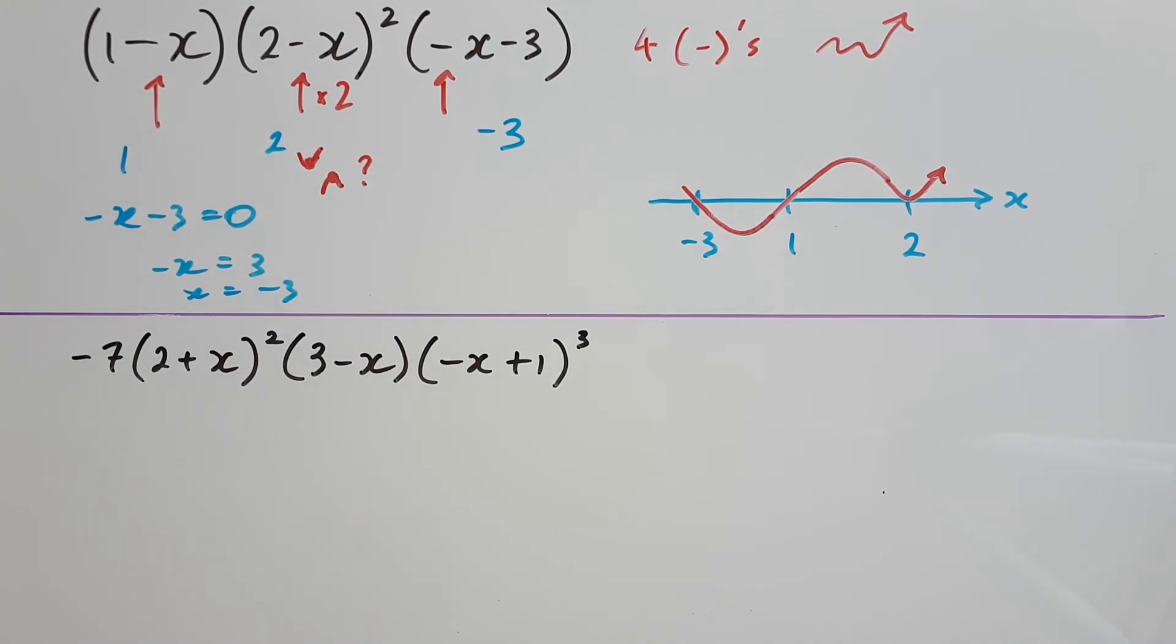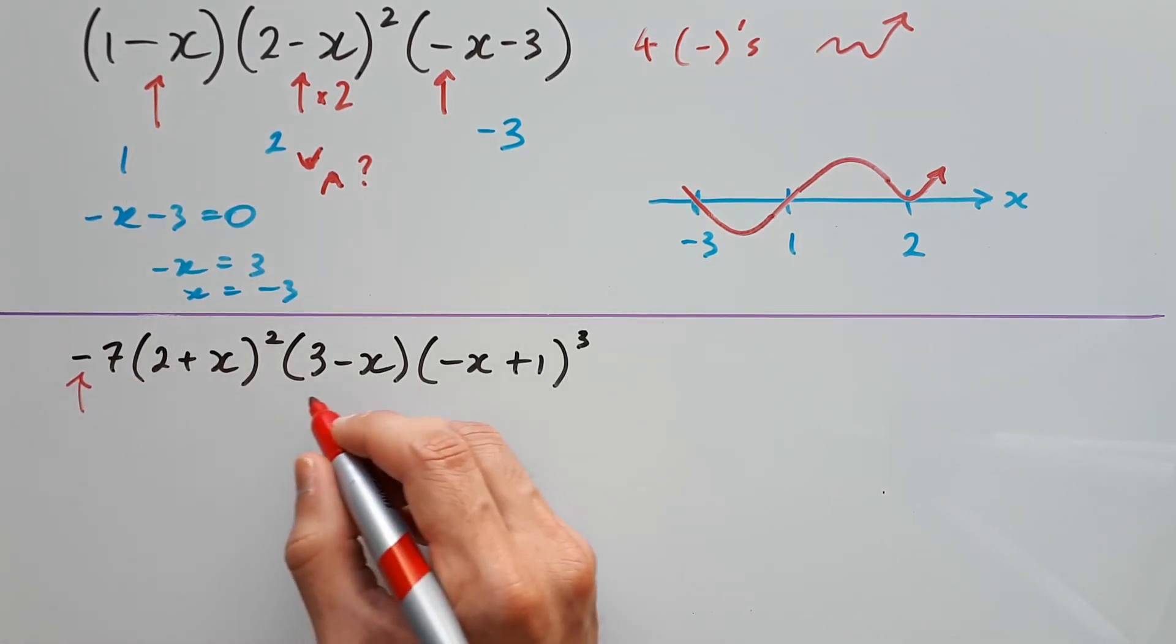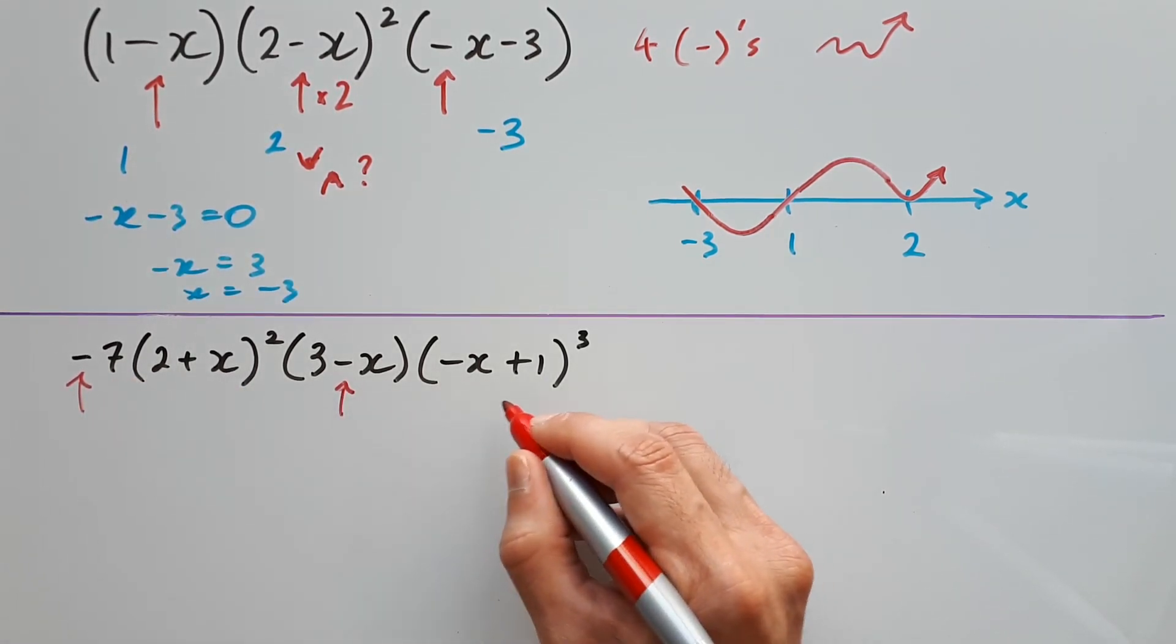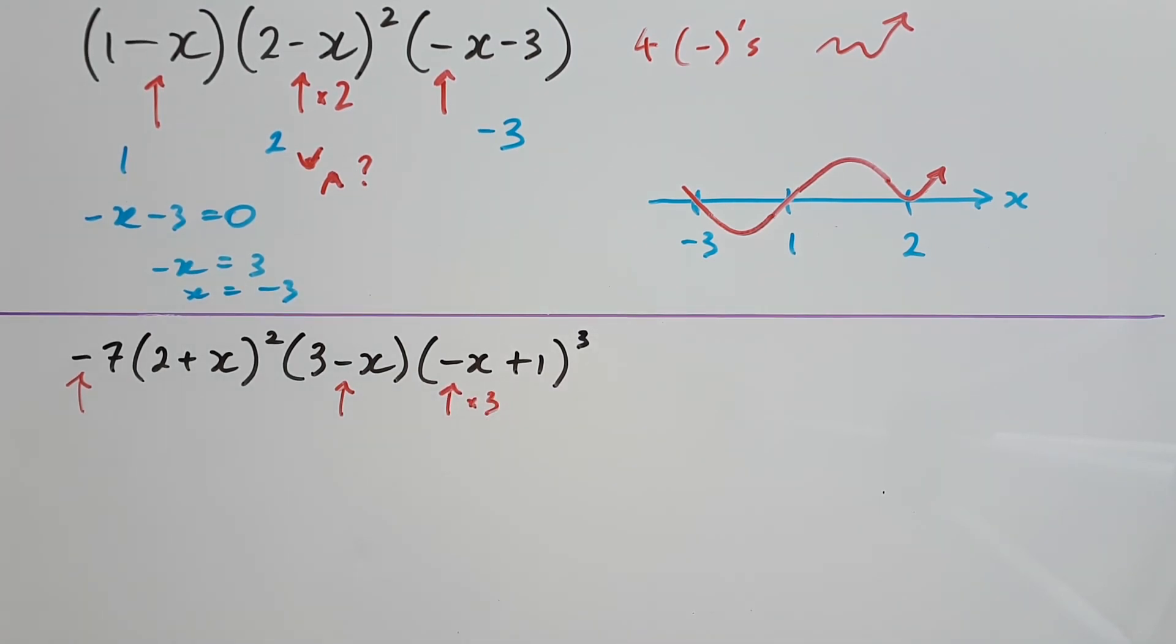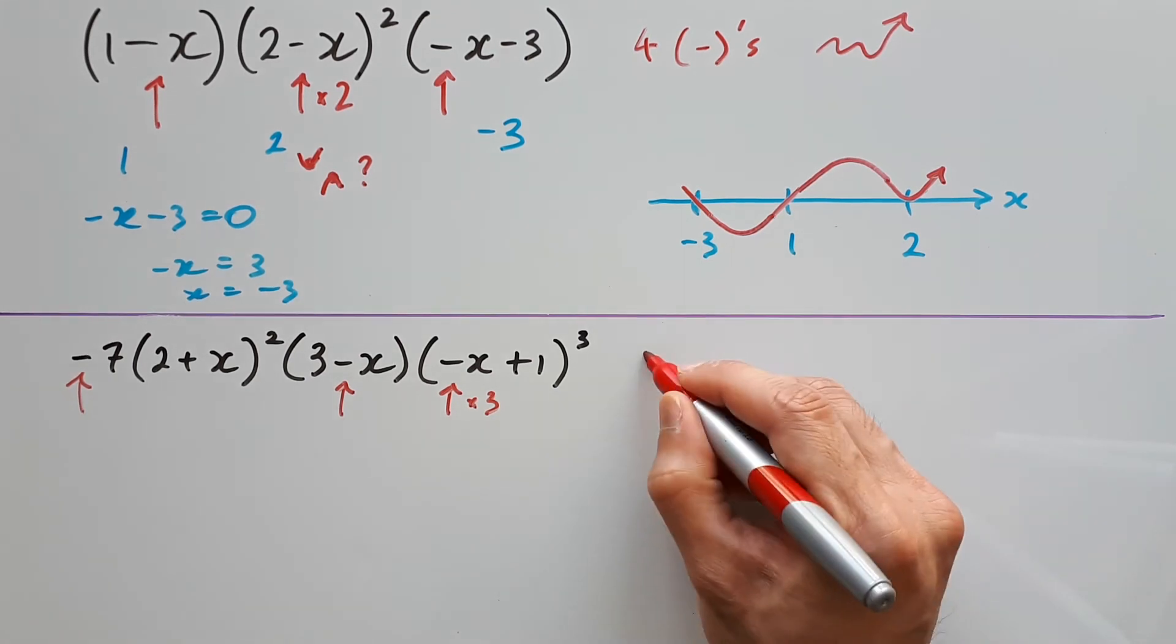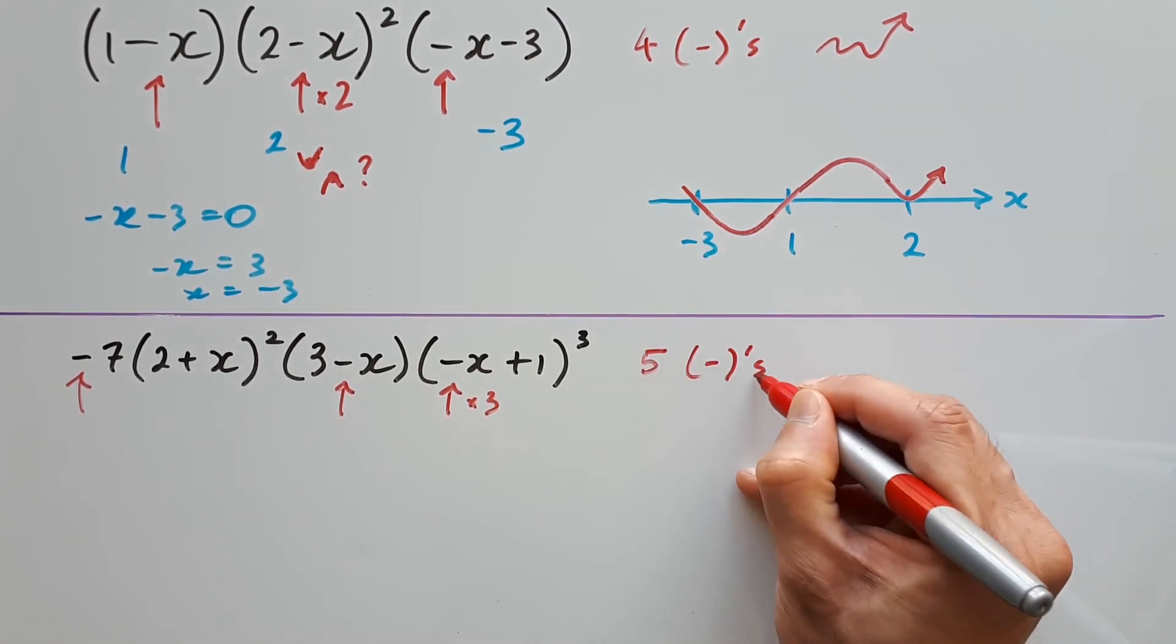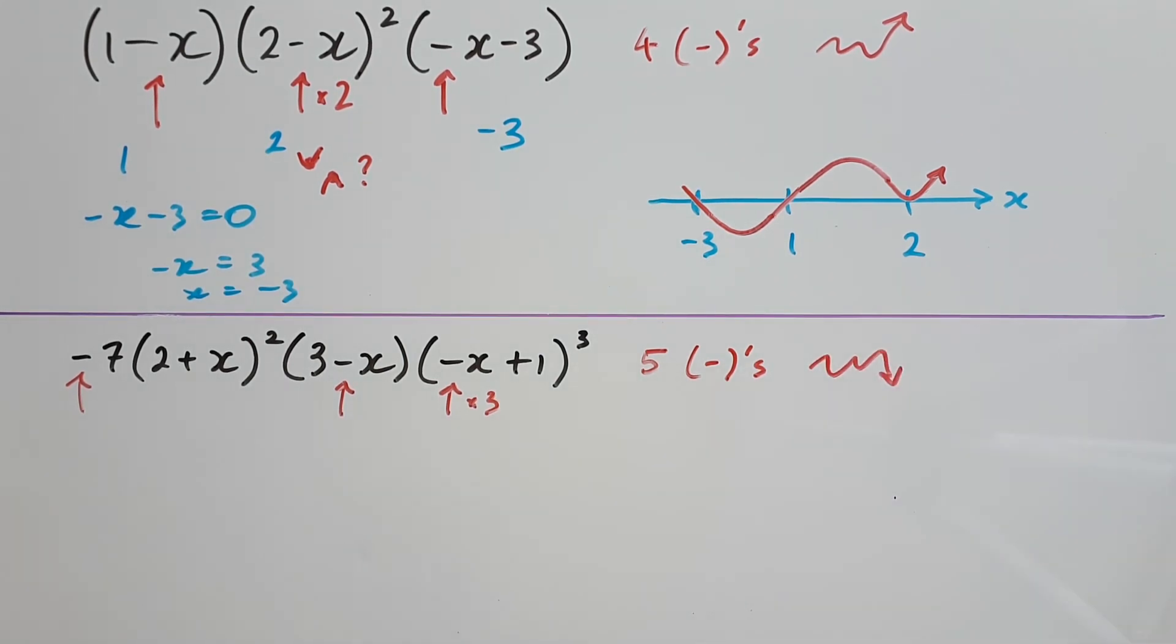This last one is more of a bonus question, but let's see how we go with it. Inspecting the negatives, there is a negative outside, and a negative inside the second bracket, and a negative inside the third bracket. However, there are 3 negatives inside that third bracket, because it's the power of 3. Which means we have a total of 5 negatives, still resulting in a negative overall, meaning our curve will finish down.